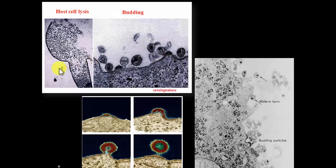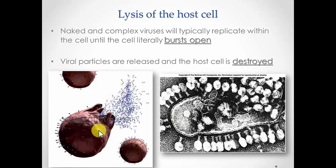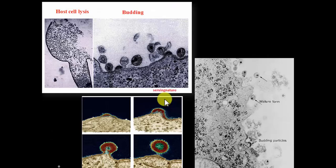Damage to host cells comes from a variety of things. Lysis clearly involves the destruction of the host cell upon release. Exocytosis and budding also cause damage in a slightly different way — not as obvious but equally damaging. So both the lysis release and the budding release cause damage to the host cell, just through different mechanisms.